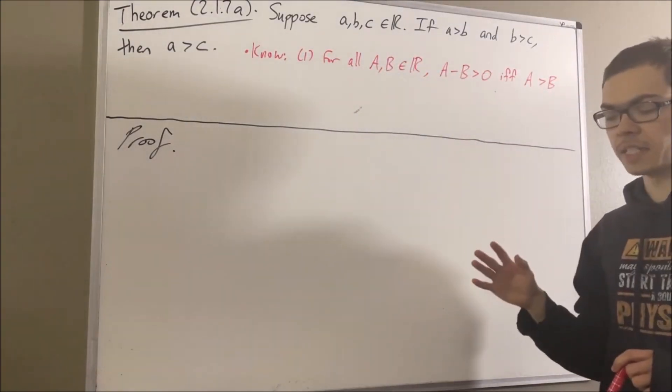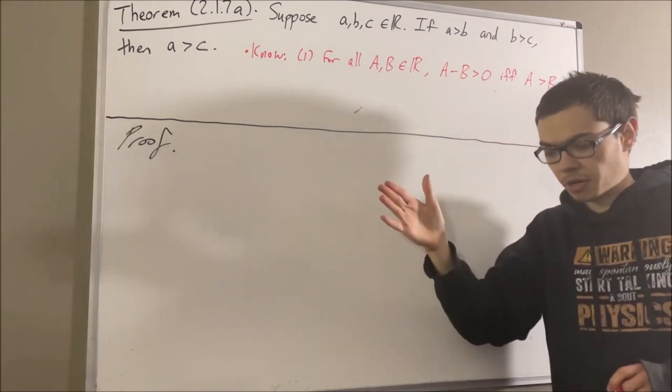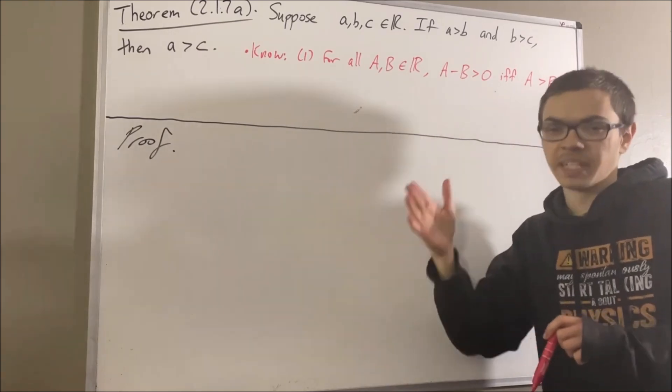And the second thing is that for every two real numbers a and b, if a is greater than zero and b is greater than zero, then a plus b is greater than zero.